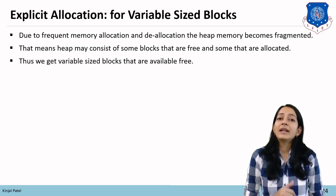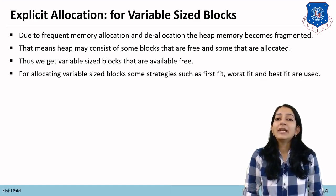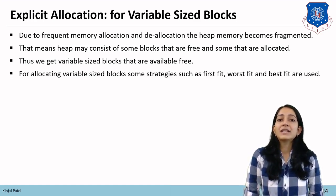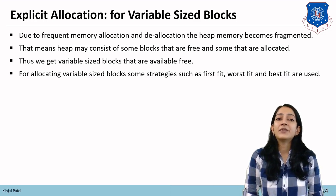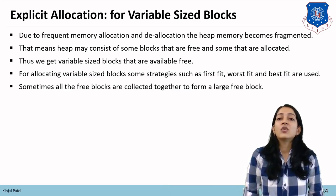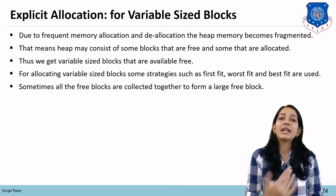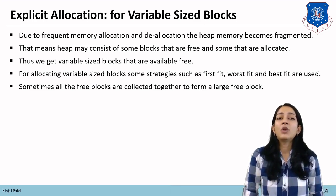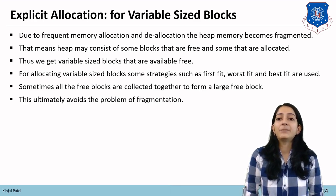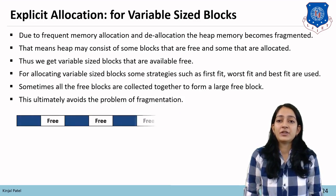We can obtain the free block from the available blocks. For allocating variable-size blocks, strategies such as first fit, worst fit, and best fit are used. Sometimes all free blocks are collected to form a large free block, and that free block can then be used to allocate memory to a variable. This ultimately avoids the problem of fragmentation.